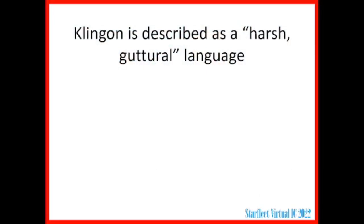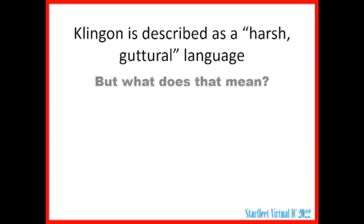He didn't have a lot of specific instructions about creating it, just that Klingon was described as a harsh, guttural language. But what exactly do we mean when we say that? English speakers often describe German as sounding guttural or Russian as sounding harsh, but speakers of German and Russian don't hear them that way. What is it that goes into that impression of a language that Okrand could use to create Klingon?